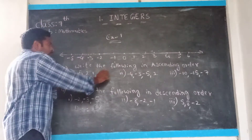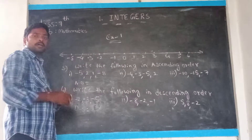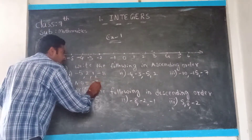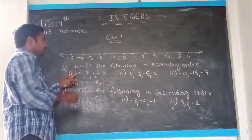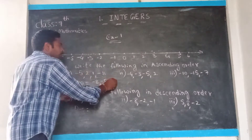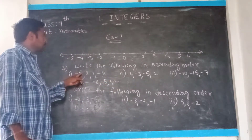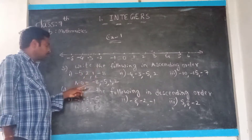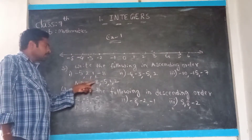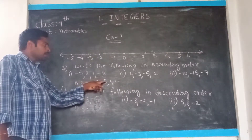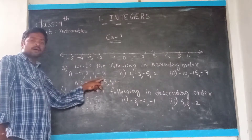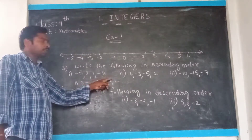Now you write ascending order. What is the small number out of these numbers? Already I told you — minus big number is called a small number. So what is the small number here? Minus 8. And the next bigger number is minus 5, and next is 1, and next is 2. So these 4 numbers written in ascending order are: minus 8, minus 5, 1, and 2. These are in ascending order — small number to big number.